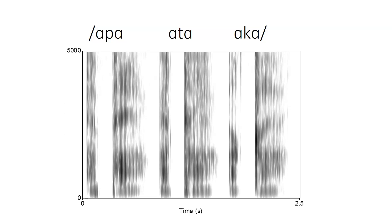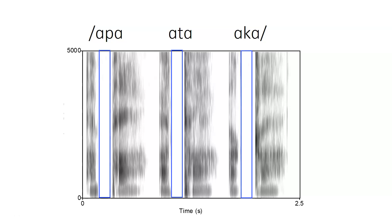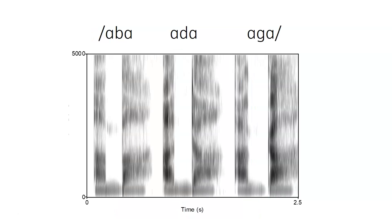Here we have spectrograms of the voiceless stops flanked by AH vowels. In each case you can see a period of near silence, followed by a transient with some aspiration noise before the onset of the following vowel. In the case of voiced stops at the same place of articulation, in these clearly articulated recorded examples, you can see a voice bar continuing through the otherwise silent stop closure, and immediately after the transient, a continuation of voicing in the following vowel.